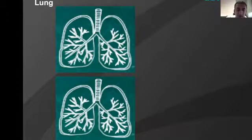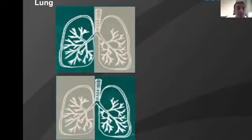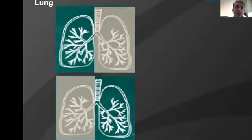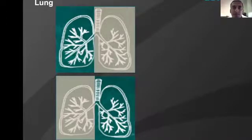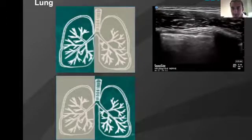This is an auscultation exam of a patient's breath sounds after receiving an endotracheal intubation. Here's the patient's left side, and here's the right. I challenge most viewers to appreciate any difference in the auscultation level of either side. It seems the patient has equal breath sounds bilaterally, which would be documented as a normal finding indicating appropriate placement of the endotracheal tube.